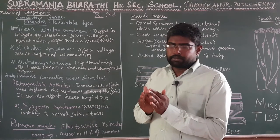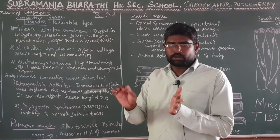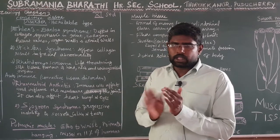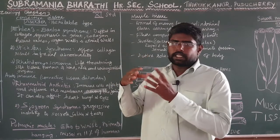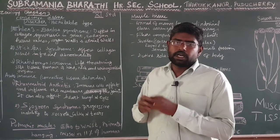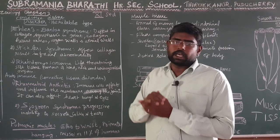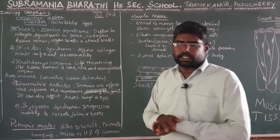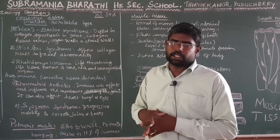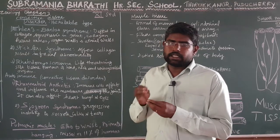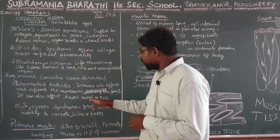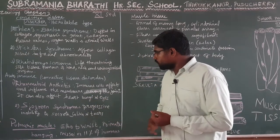The synovial joint contains a sac or membrane. In autoimmune disease, the immune cells attack this membrane. The affected organs include the heart, lungs, and eyes.